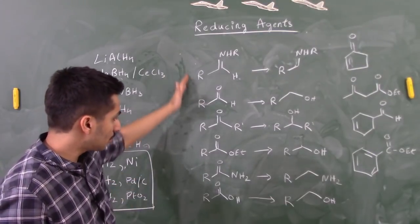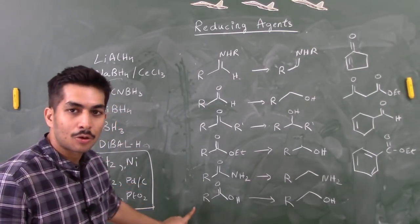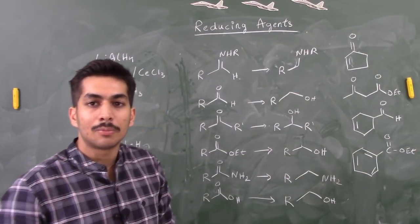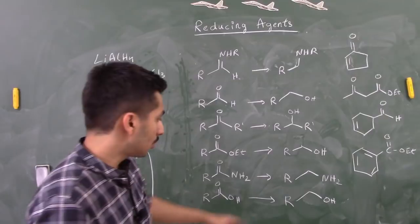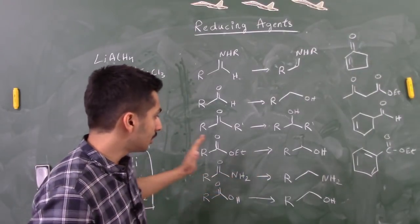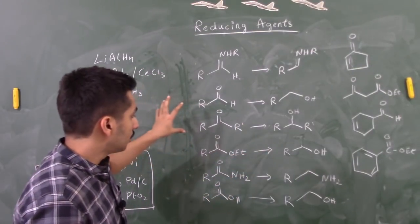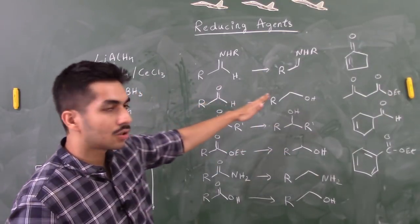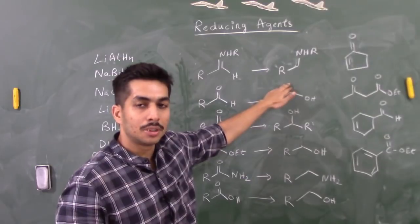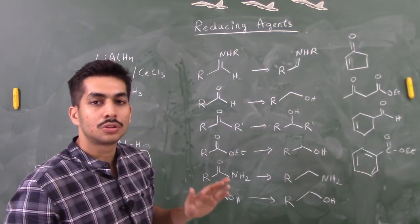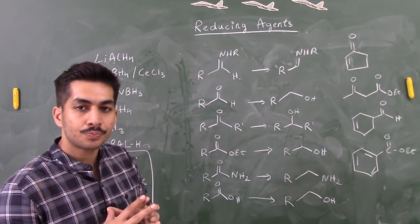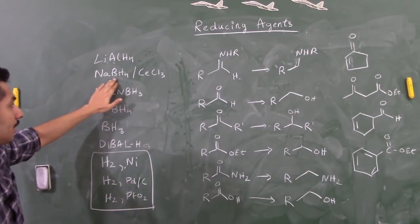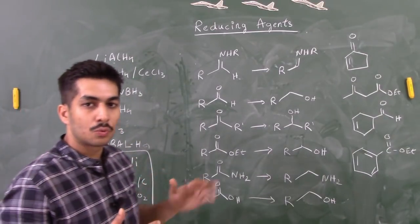LiAlH4 does not reduce carboxylic acids to alcohols. To summarize: it reduces amides to amines, esters to alcohols, ketones to secondary alcohols, aldehydes to alcohols, and imines to amines — but it cannot reduce carboxylic acids.